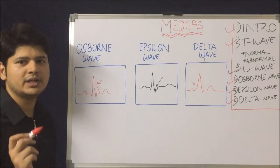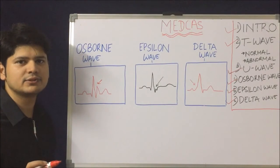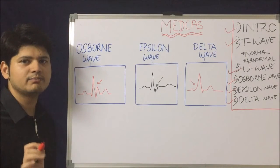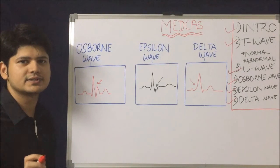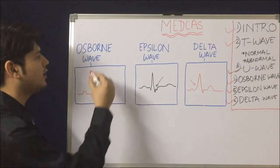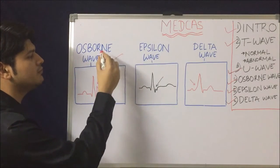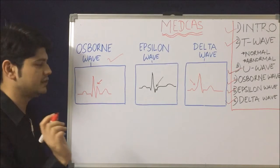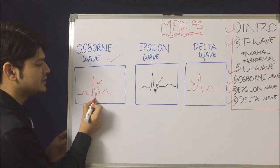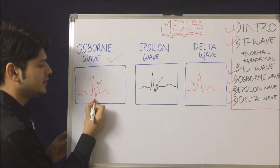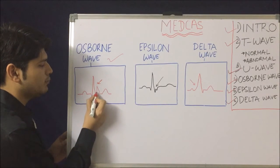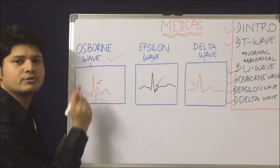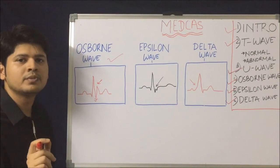We have understood about the T wave and U wave. Now we will discuss some miscellaneous waves that are not commonly examined at the undergraduate level but are important to remember in clinical practice. We start first with the Osborne wave. The Osborne wave is seen as a J point elevation — where the QRS ends and the ST segment starts is called the J point. When this J point gets elevated as shown in this image, it is called the Osborne wave.